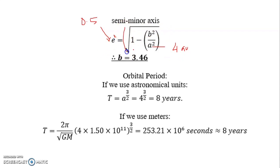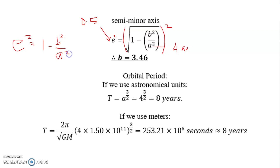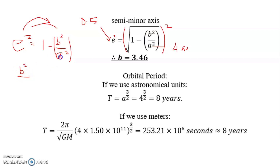We square both sides so it becomes e² = 1 − b²/a². We rearrange this equation, bringing terms to the left and e to the right. It becomes b²/a² = 1 − e², where a is 4, so we substitute 4².